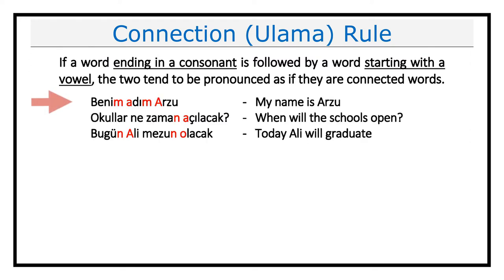The rule says that if a word ending in a consonant is followed by a word starting with a vowel, the two tend to be pronounced as if they are not separate but connected words. Let's see the rule in examples. In the first example, we have two connection cases: one between the words 'benim' and 'adım', and the second between the words 'adım' and 'arzu'. In both cases, we have a word ending in a consonant being connected to a word starting with a vowel. Therefore, you will pronounce the sentence not as 'benim adım arzu' but as 'benim adım arzu', where all the words are connected to each other.